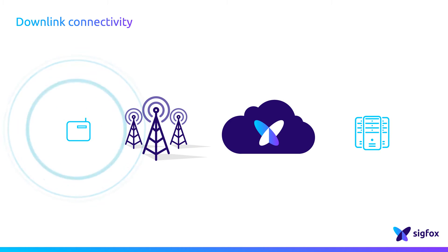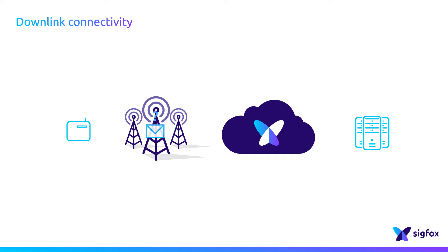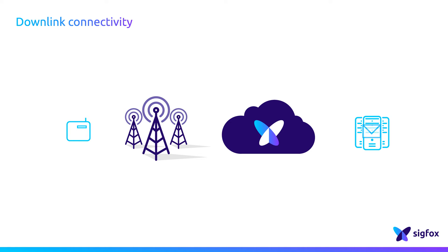The device transmits an uplink message containing an uplink request flag that all base stations detect in the area, demodulate, and relay to the Sigfox Cloud. Then, the Sigfox Cloud pushes the uplink message to the customer or partner IT platform, which sees that the device is not only sending an uplink message, but also asking for a downlink message.